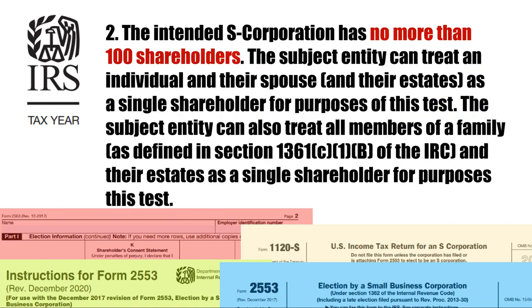Number 2. The intended S-Corporation has no more than 100 shareholders. The subject entity can treat an individual and their spouse and their estates as a single shareholder for purposes of this test. The subject entity can also treat all members of a family, as defined in Section 1361(c)(1)(B) of the Internal Revenue Code, and their estates as a single shareholder for purposes of this test.